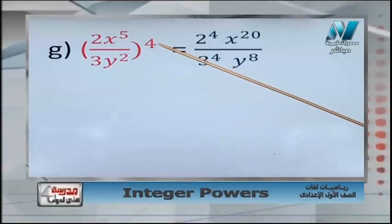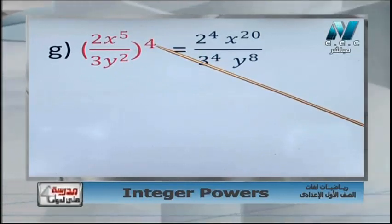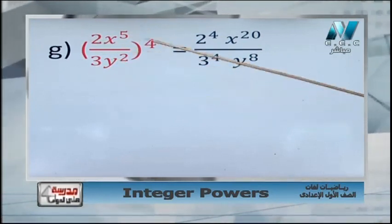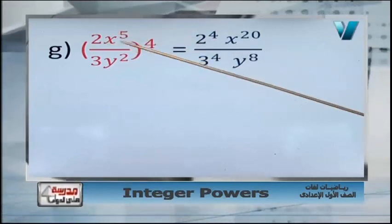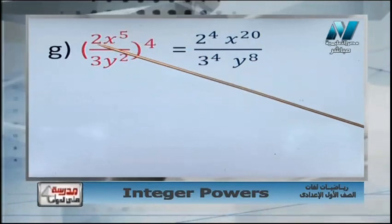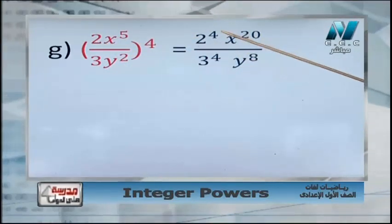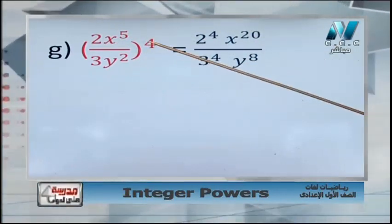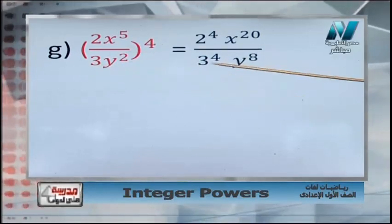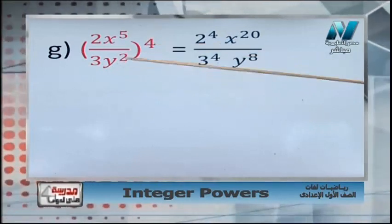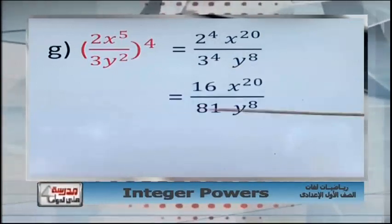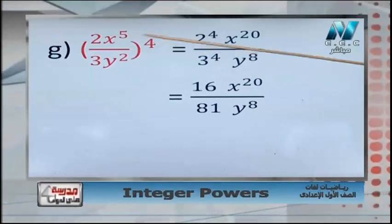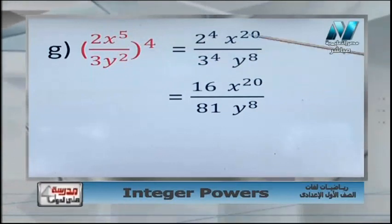Here: y power 2, all power 4 — and also the term 2 x power 5 over 3, all power 4. The power 4 will be distributed over all parts: over 2, over x power 5, over 3, and over y power 2. So: 2 power 4 equals 16; x power 5, power 4 — 5 times 4 equals 20, giving x power 20; 3 power 4 equals 81; y power 2, all power 4 — 2 times 4 equals 8. Final simplified answer: 16 x power 20 over 81 y power 8.